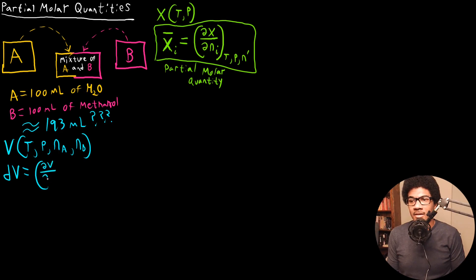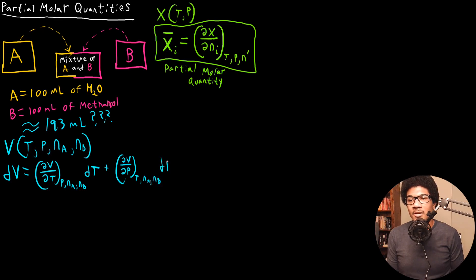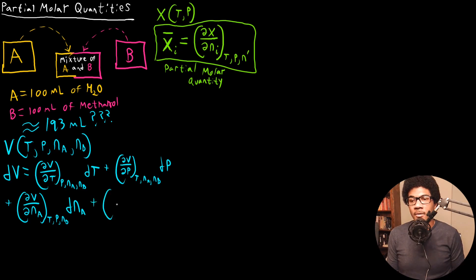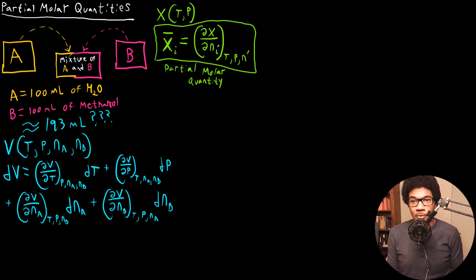Writing out dV: we get (∂V/∂T) at constant pressure, nA, and nB times dT, plus (∂V/∂P) at constant temperature, nA, and nB times dP, plus (∂V/∂nA) at constant temperature, pressure, and nB times dnA, plus (∂V/∂nB) at constant temperature, pressure, and nA times dnB. These last two terms are partial molar volumes. This fits the exact definition we wrote out in the beginning for a general property — these are called the partial molar volumes.